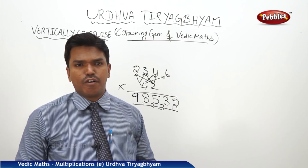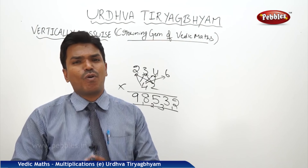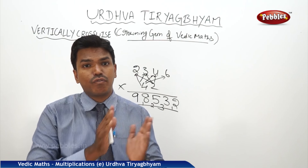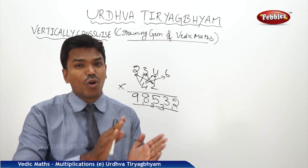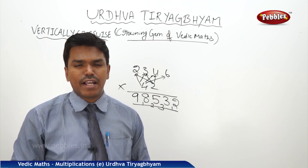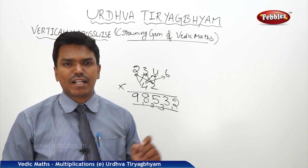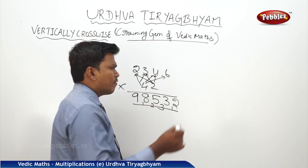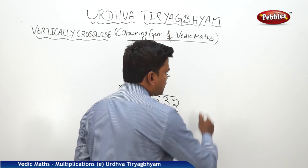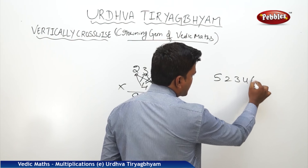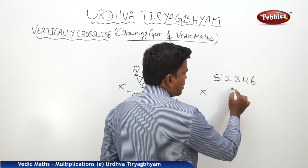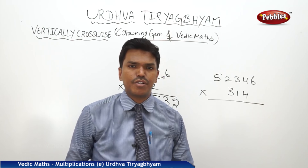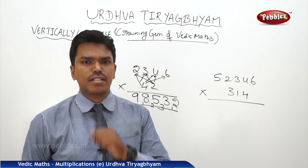See, this time I am not bothering about the number of steps. What I am bothering about is whether my calculation steps are going in order, following the pattern and the logic. If I understand the logic — which digit should be multiplied with which digit — it is no problem to calculate any number into any number and get the answer within a single step and in less time. Now let us multiply a five-digit into three-digit: 52346 × 314.